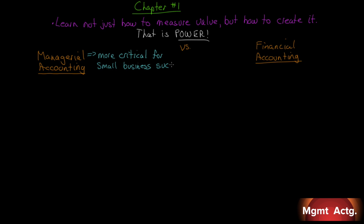The very first difference between the two should be obvious. Managerial accounting is really for the insiders of the business — managers — whereas financial accounting is for outsiders. And we'll get to outsiders when we look at a key reason why we want financial information, and that is for decision making.